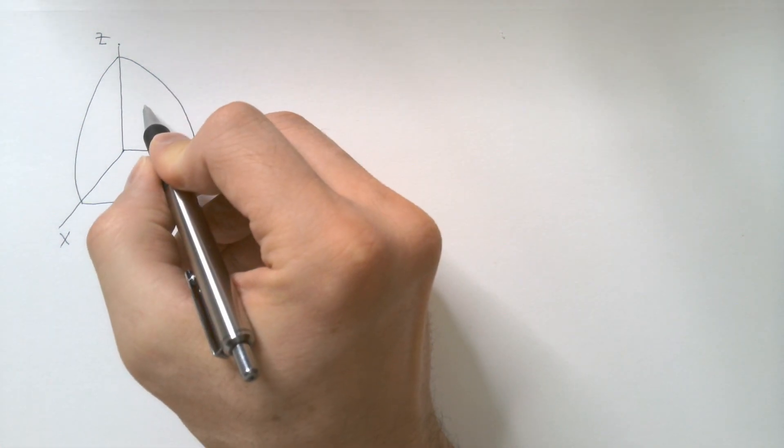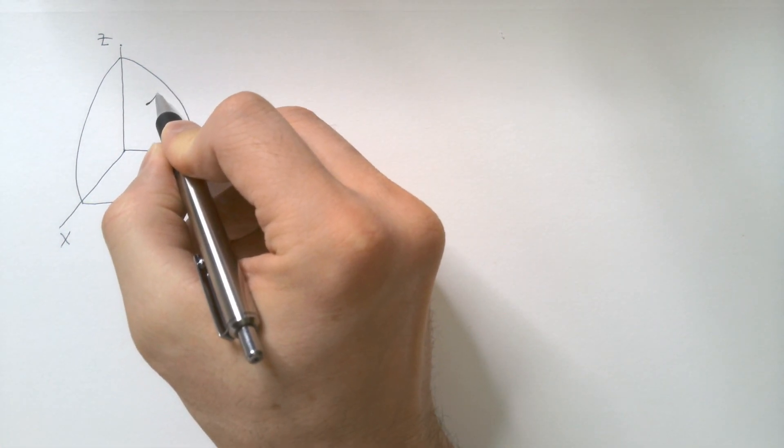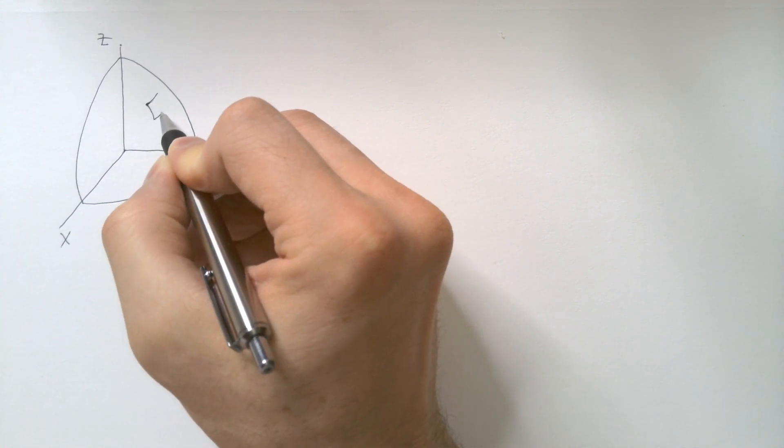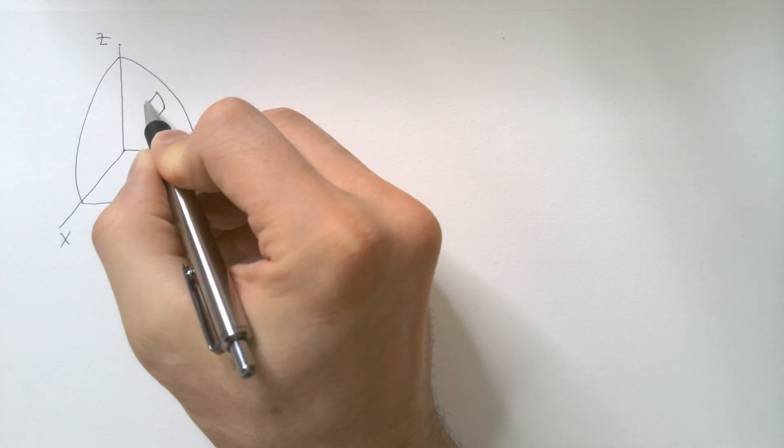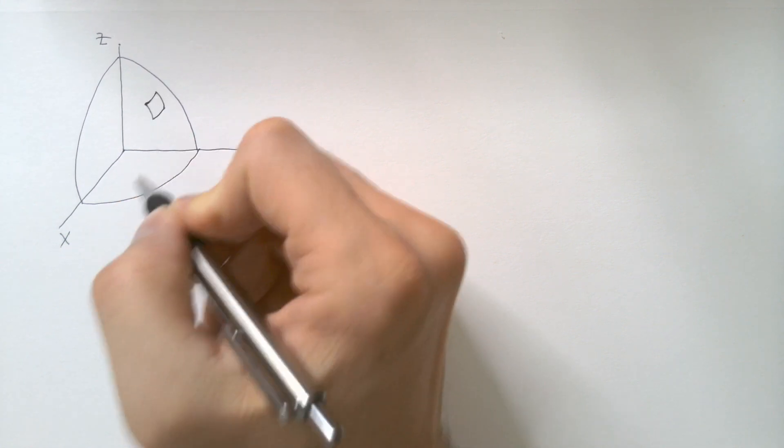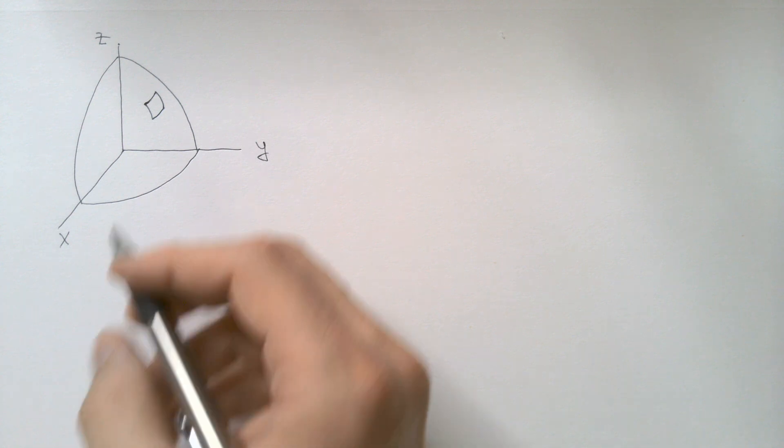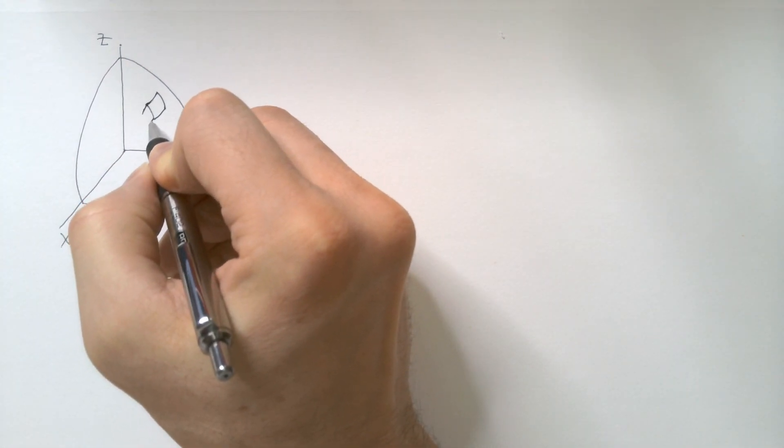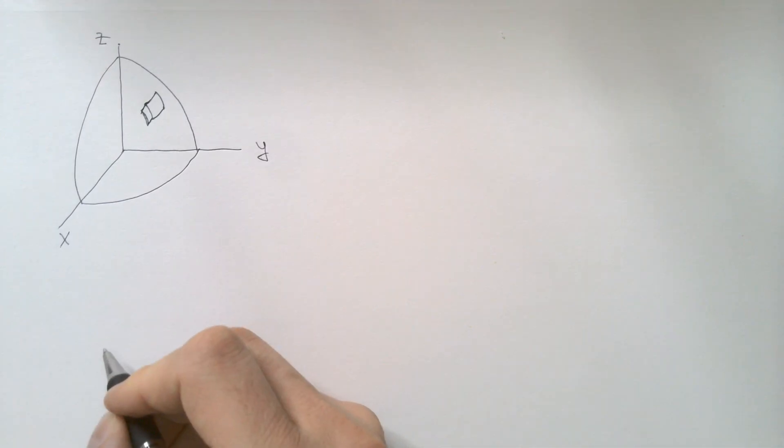Well, that means we have to take a surface on this sphere, surface element like so, and associate, so to speak, a certain depth to this element like so.